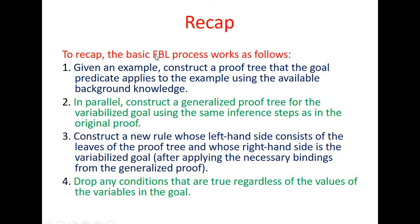Recap: the basic EBL process works as follows. Given an example, construct a proof tree showing that the goal predicate applies to the example using the available background knowledge. In parallel, construct a generalized proof tree for the variabilized goal using the same inference steps as in the original proof. Construct a new rule whose left-hand side consists of the leaves of the proof tree and whose right-hand side is the variabilized goal. Drop any conditions that are true regardless of the values of the variables in the goal.